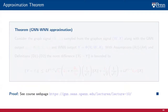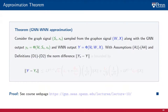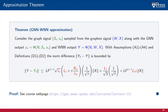With the setup, assumptions, and definitions in place, we can state the GNN-WNN approximation theorem. Consider the graph signal S_N X_N sampled from the graphon signal WX. Further, consider the corresponding GNN and WNN outputs Y_N and Y. The outputs are the result of processing these signals on the graph and on the graphon, but they both use the same set of coefficients. If assumptions A1 through A4 hold and considering definitions D1 and D2, the difference between the norms of the induced graphon signal Y_N and the graphon signal Y is bounded by the expression shown on the slide.